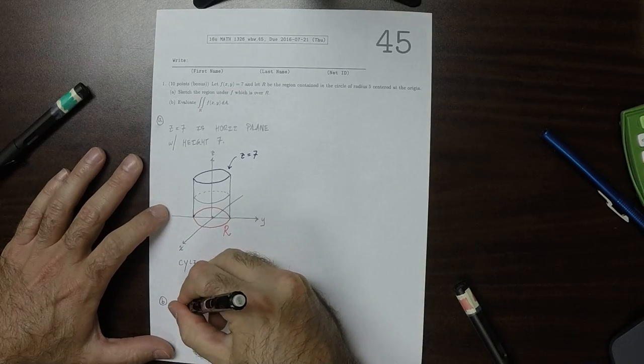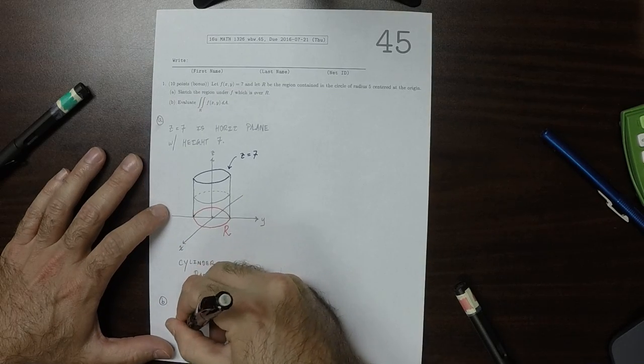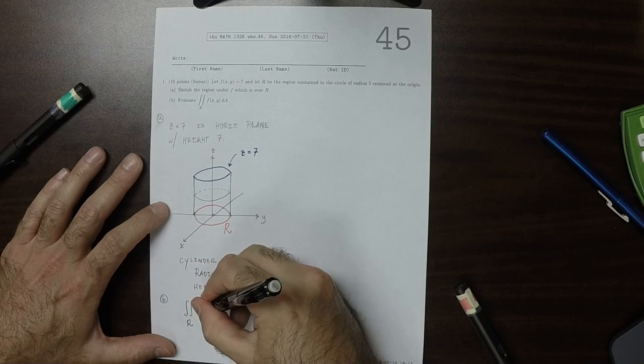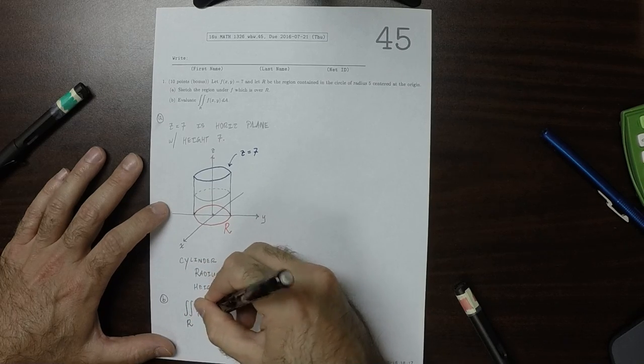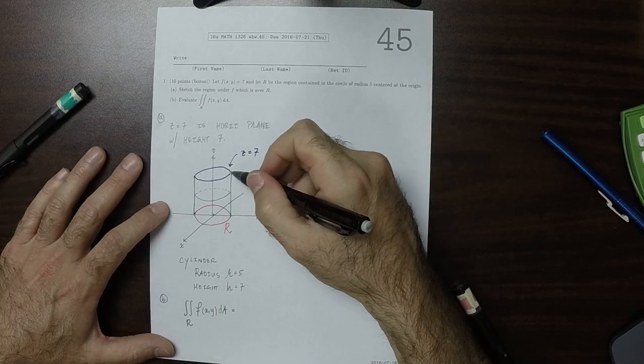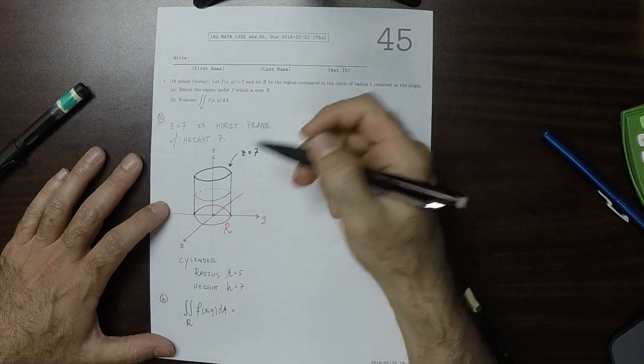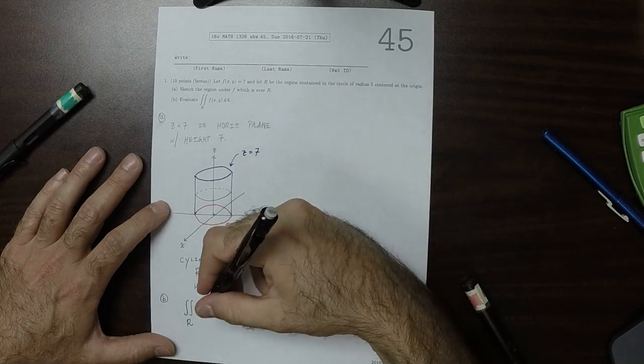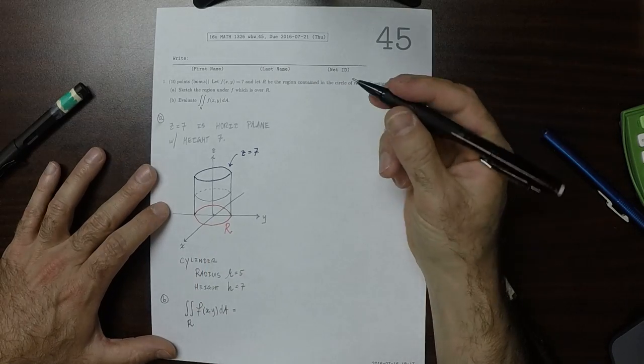So the double integral over the region of f of x and y dA—because 7 is always positive over R—that means that this double integral coincides with our notion of volume.